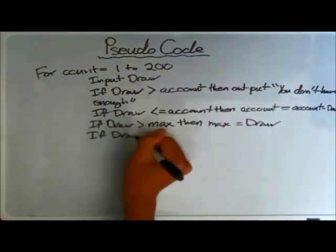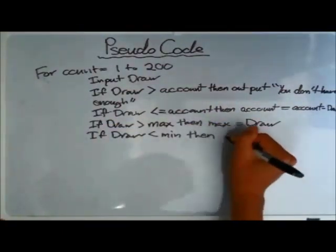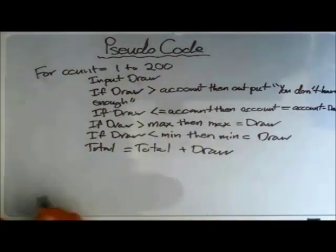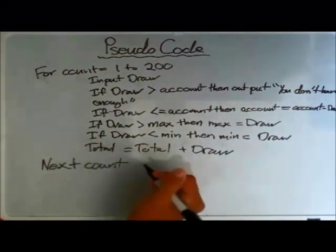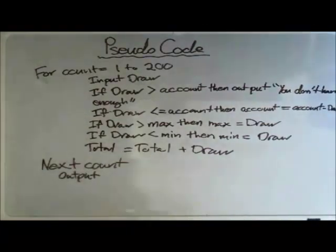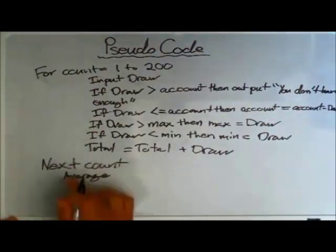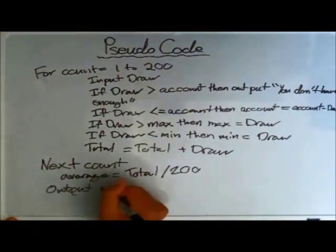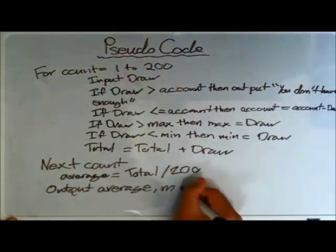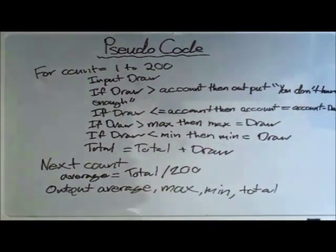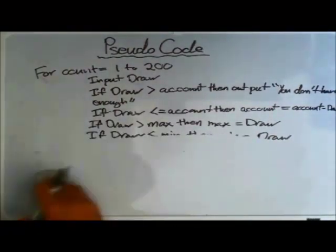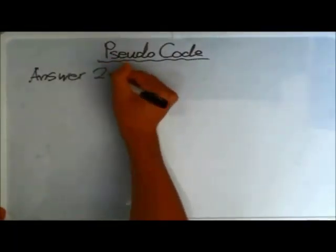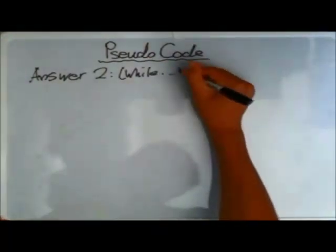If draw is greater than max, then max equals draw — because we want to see the highest withdrawal. If draw is less than min, we record the minimum — the lowest withdrawal. Total equals total plus draw. Then NEXT count. Outside the loop we calculate average and output the four results.